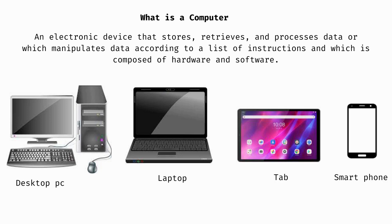What is a computer? A computer is an electronic device. We need to divide this computer into two parts: one is computer hardware and the other is computer software. For examples, you can add a desktop PC, a personal computer. When you look at a desktop, it has a keyboard and mouse, a system case or cabinet.